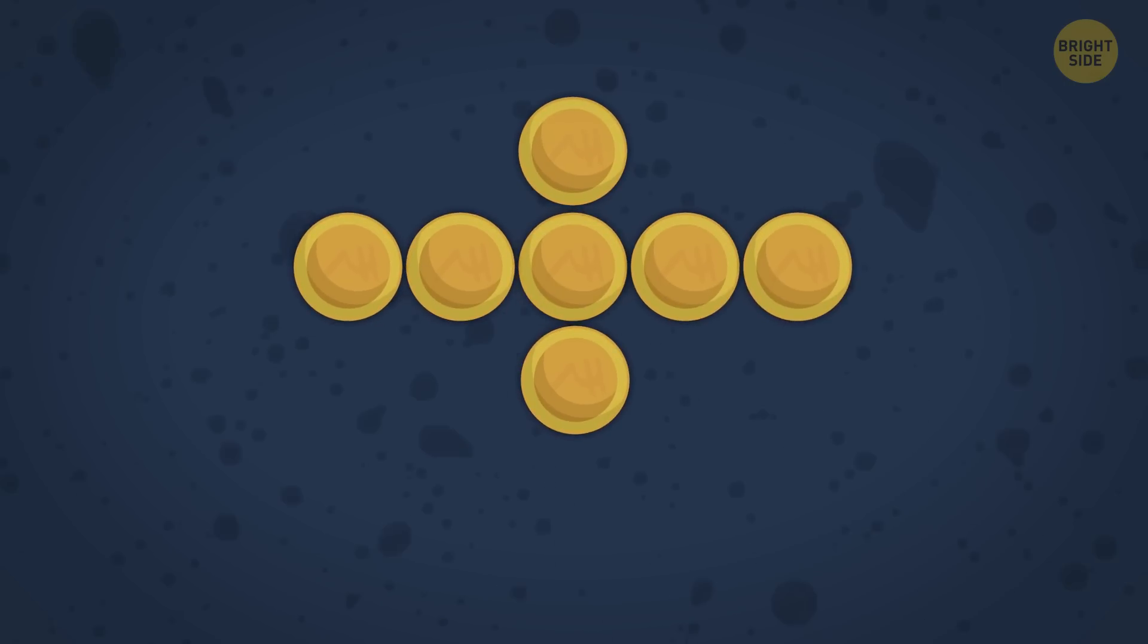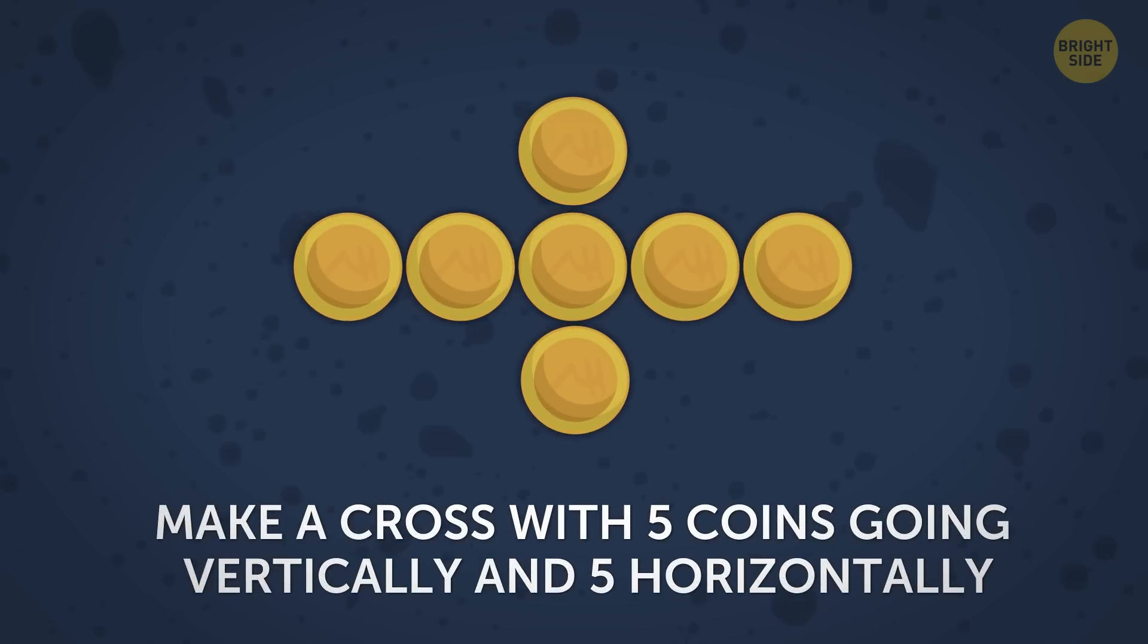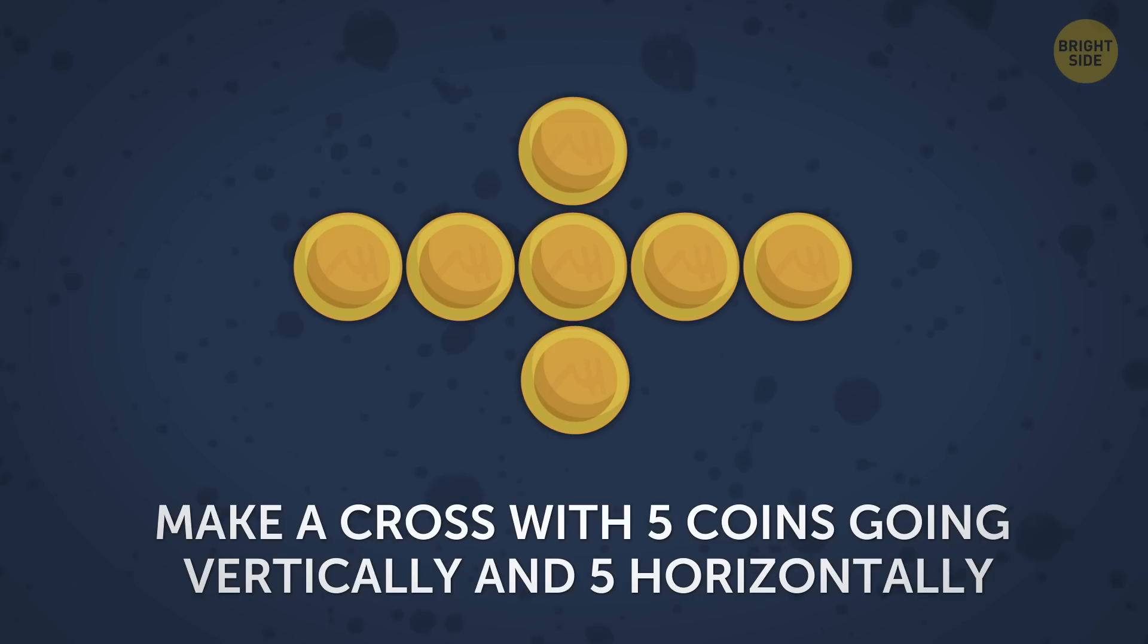And now the challenge is to make a cross with 5 coins going vertically and 5 horizontally. But you can only move 2 coins. Sounds impossible. But there's actually a way out. Good luck.